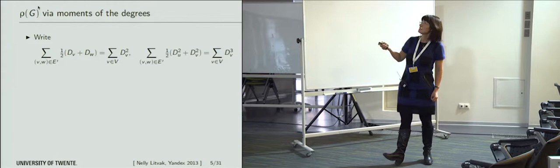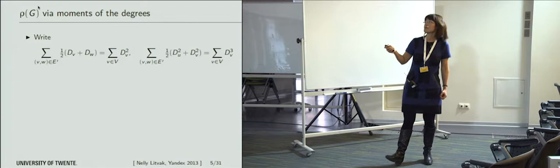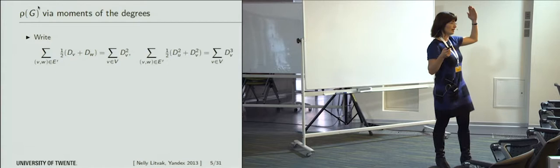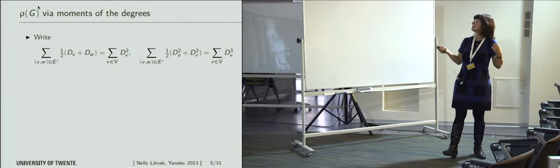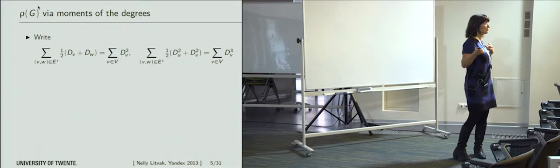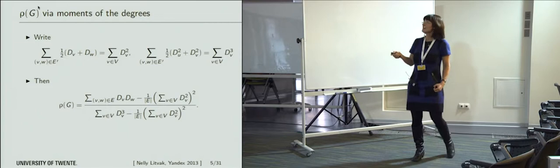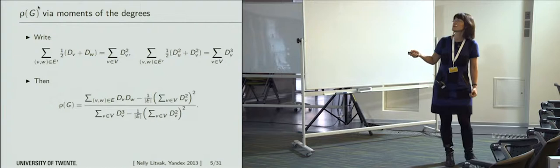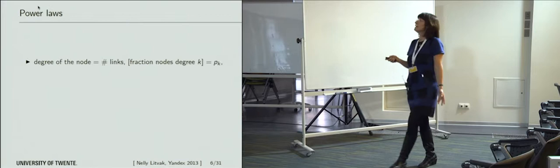I can explain this briefly. If we write the summation over edges as a summation over vertices, every vertex is counted as many times as its degree, and that is why we have degree squared here. Similarly, when we find the expectation of the second moment over edges and write it in terms of summation over vertices, we obtain a third moment — the sum of third powers. When we rewrite the assortativity coefficient in these terms, we see third powers in the numerator.